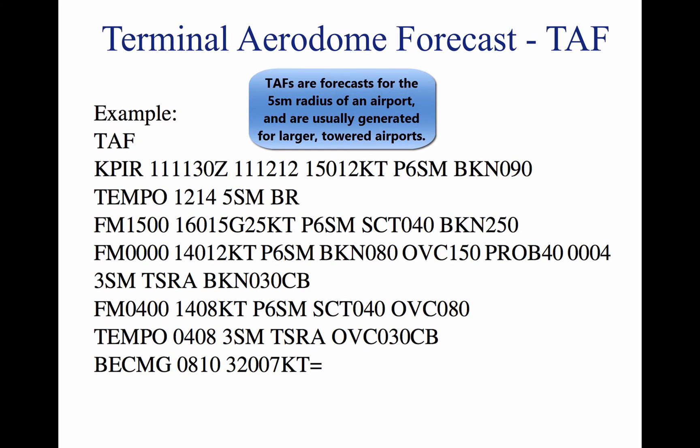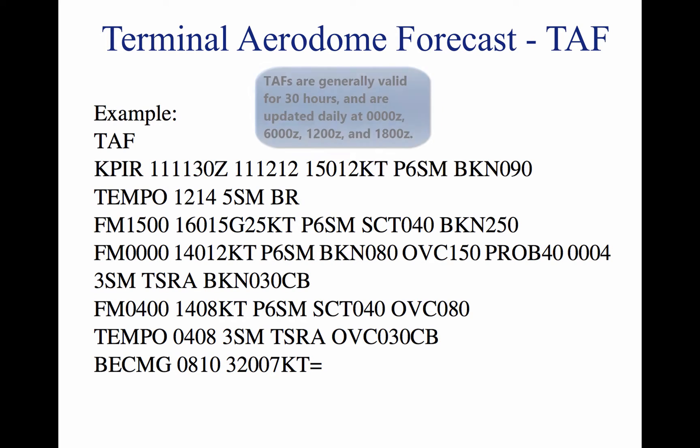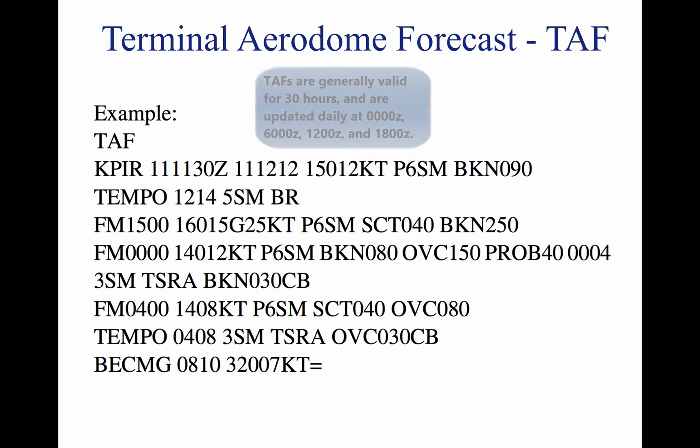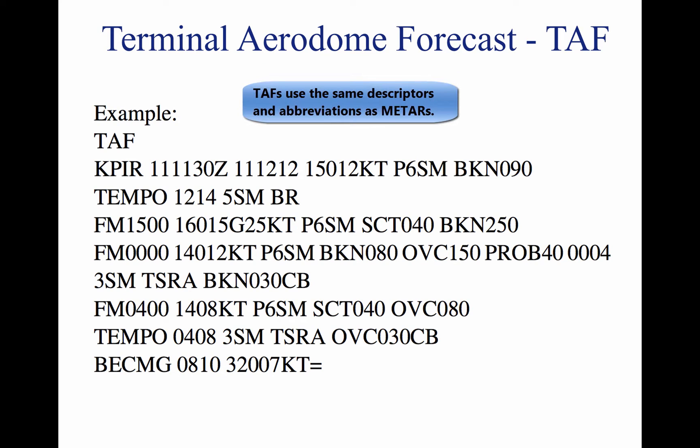A TAF is a report established for the five statute mile radius around an airport. TAF reports are usually given for larger airports. Each TAF is valid for a 30-hour time period and is updated four times a day at 0000 Zulu, 0600 Zulu, 1200 Zulu, and 1800 Zulu. The TAF utilizes the same descriptors and abbreviations as used in the METAR report.